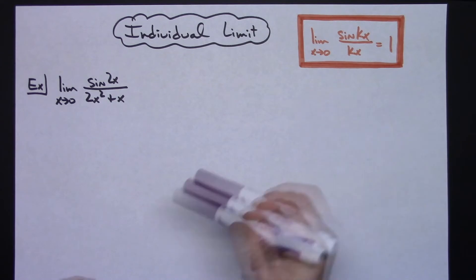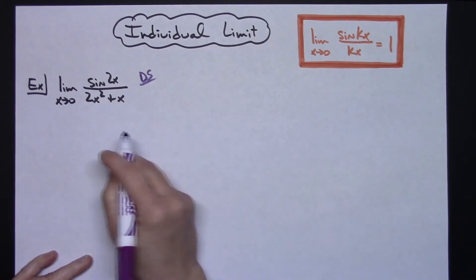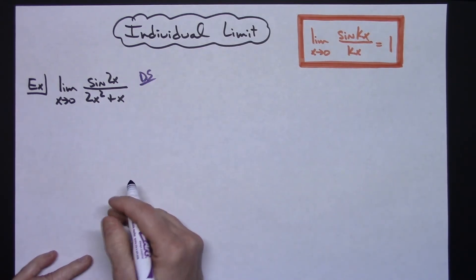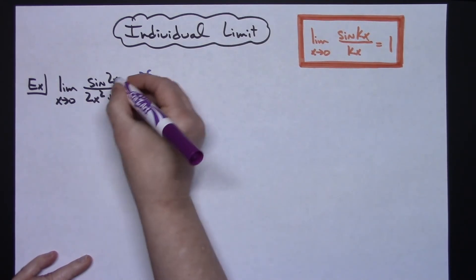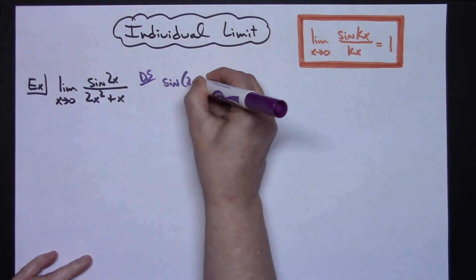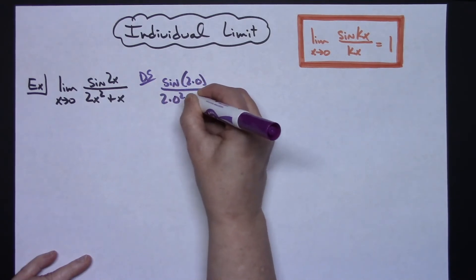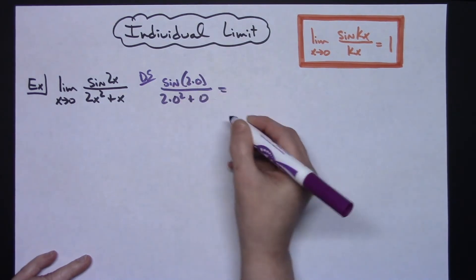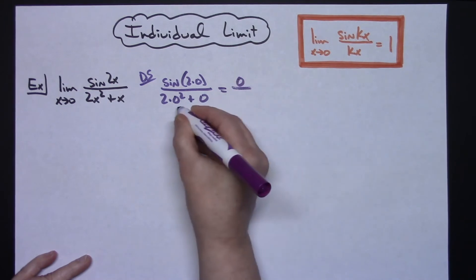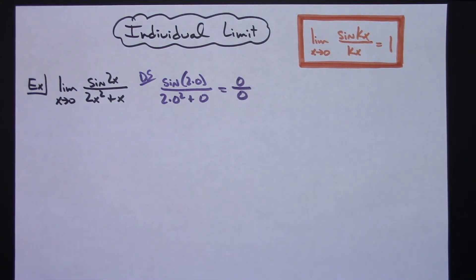Before I start any limit problem, the first thing that you should always do is a direct substitution to make sure that we have that indeterminate form. If I do a direct substitution, I'm going to have sine of 2 times 0 all over 2 times 0 squared plus 0. Sine of 0 on top is 0, and 0 plus 0 on the bottom is going to give me 0. So that 0 over 0 indeterminate form definitely shows up here.